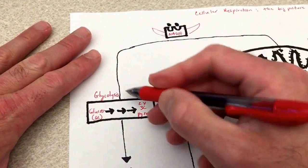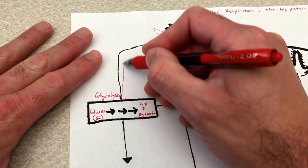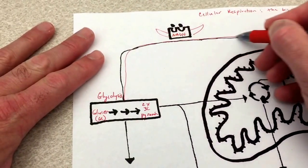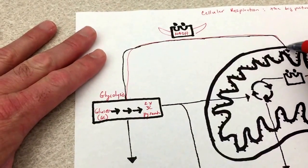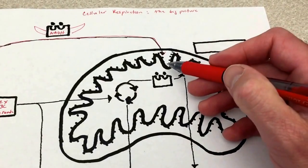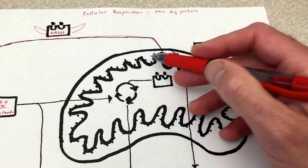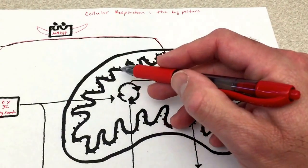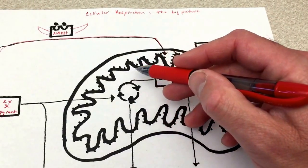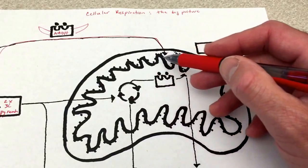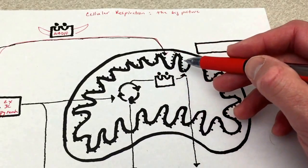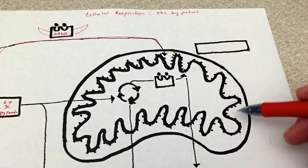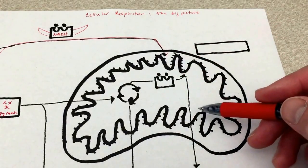The most important thing is that we load these electrons onto NAD+, and reduce it into NADH, which then flies off and drops off its electrons at these proteins — these little dots — embedded in the inner membrane of the mitochondrion.